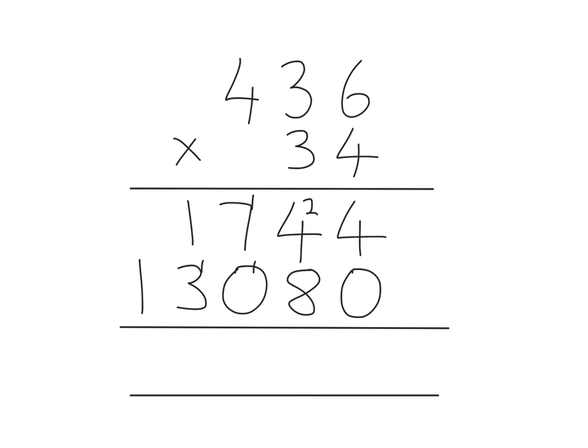Okay, so now what we need to do, we need to add up both rows here. So we've got four add zero, which we know is four. Four add eight is twelve, so we put the two there, the one just below.